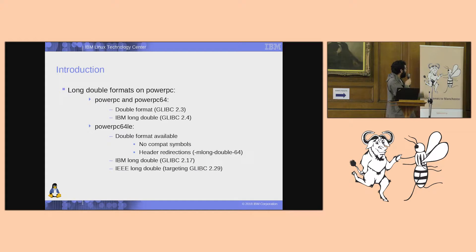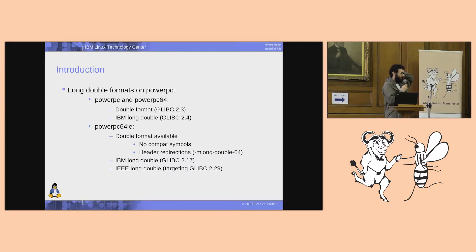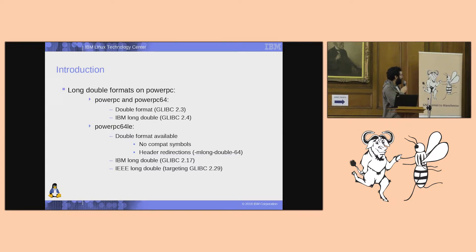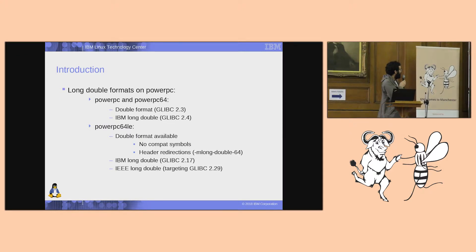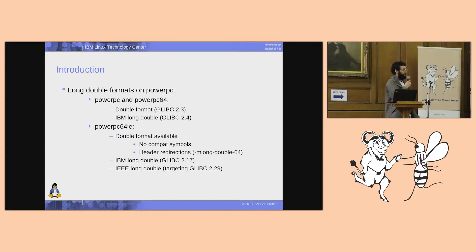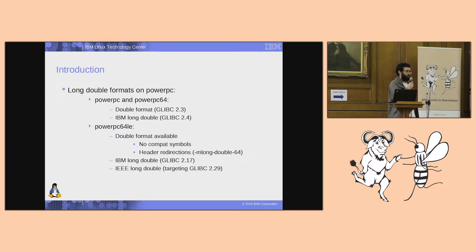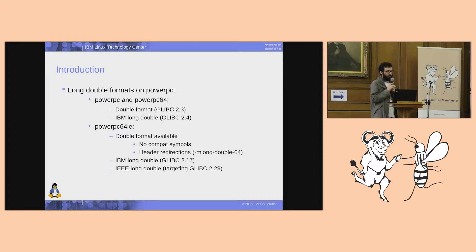So, on PowerPC long double has many formats. At the first port of the PowerPC architecture we only had 32-bit and 64-bit PowerPC. At the first implementation they had a long double format which was the same as double — this is on Glibc version 2.3. And then on Glibc version 2.4 this was changed to have a different format, which most of you know as the IBM long double format, sometimes referred to as double-double.